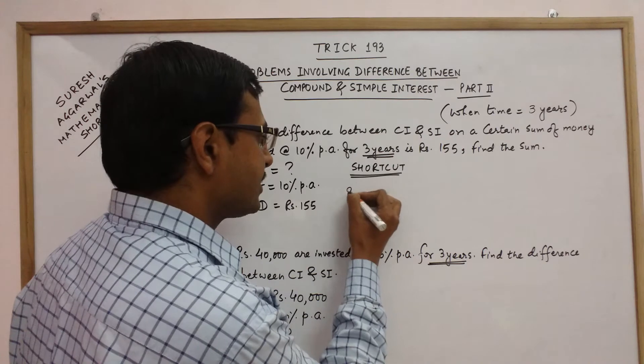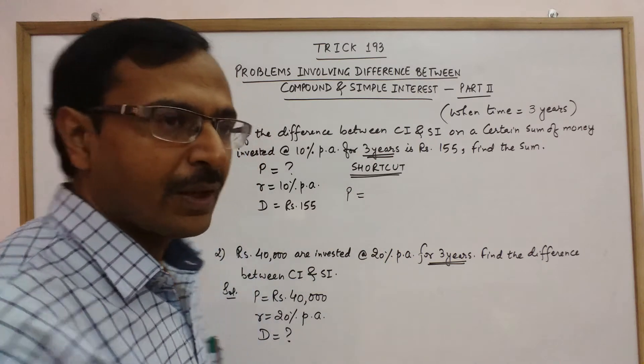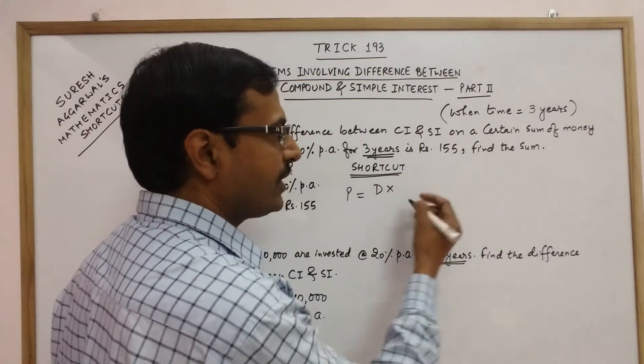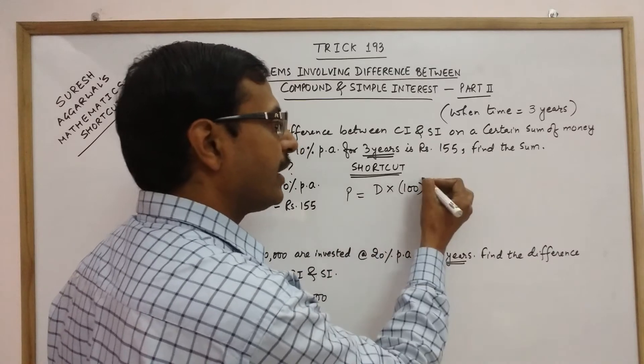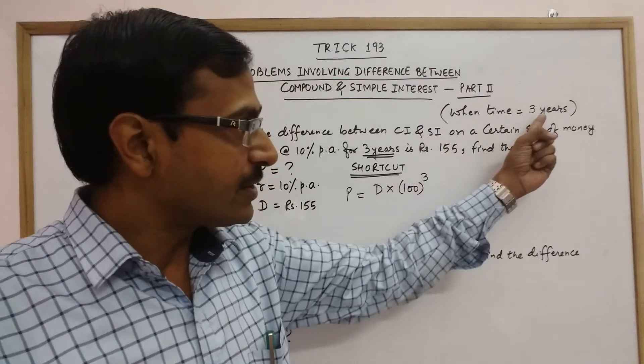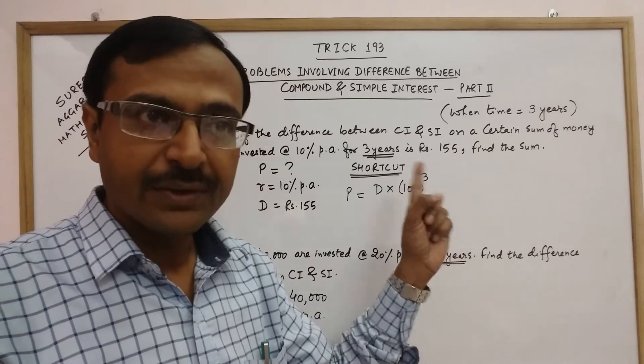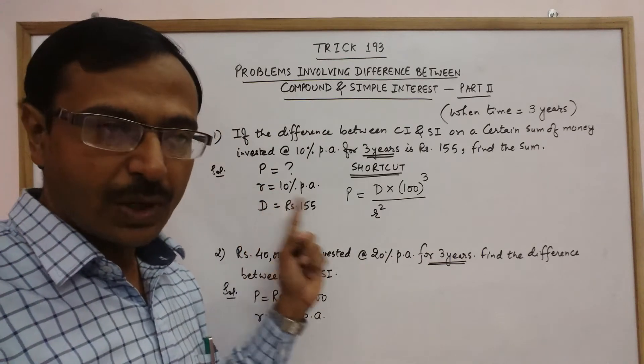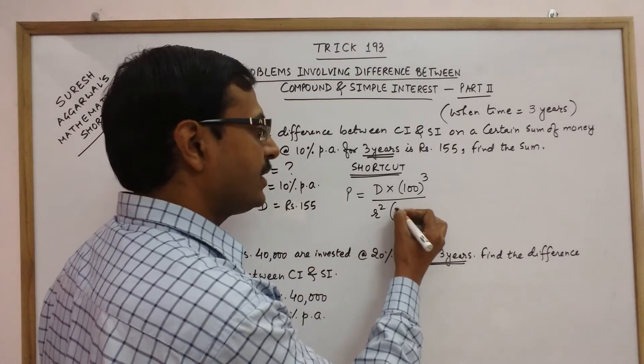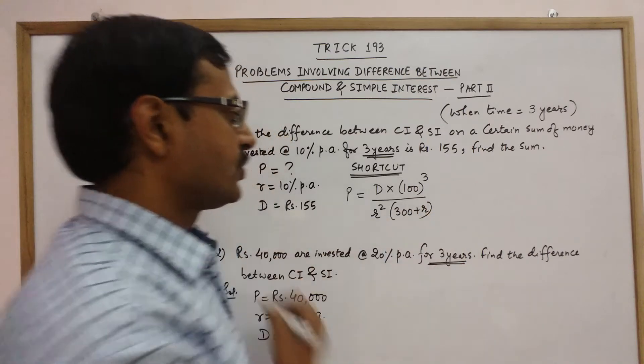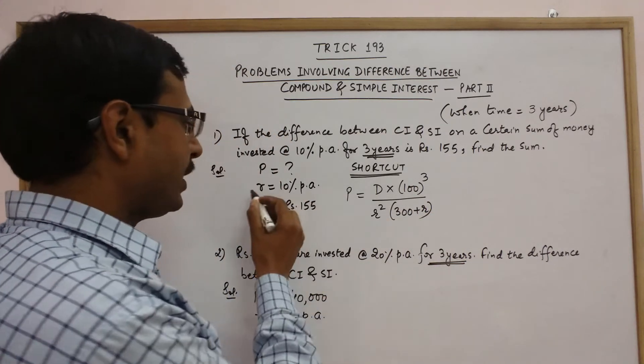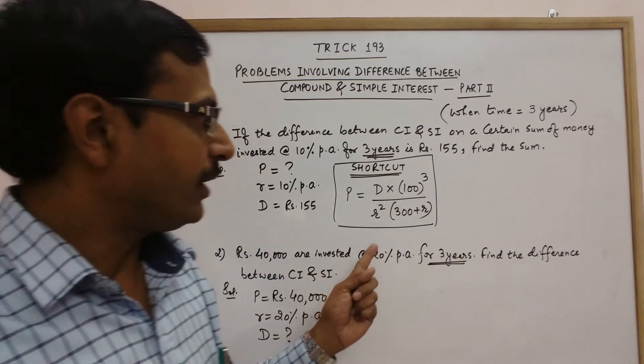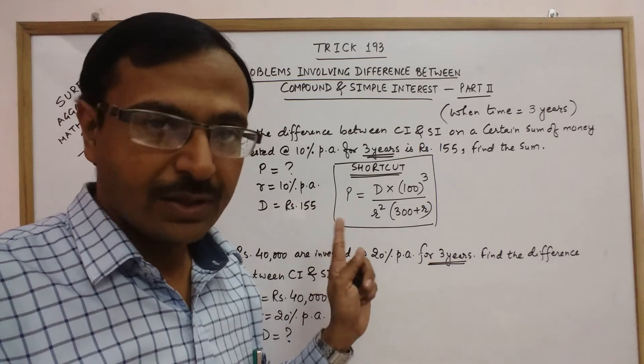Now the shortcut for this is P equal to, now P is the principal amount, D into, now the time is 3 years, so we need to write 100 and raise it to the power of number of years. So number of years here is 3, so 100 raised to power 3 divided by R square. R is the rate of interest, so R square multiplied by 300 plus R. So you see we have three variables here: P, R and D related with this important shortcut.